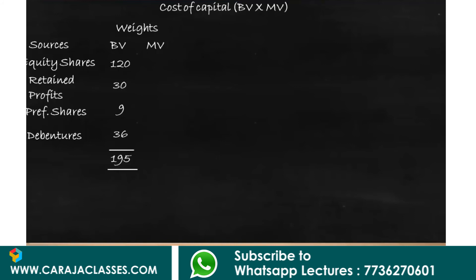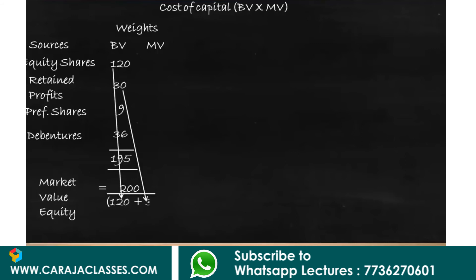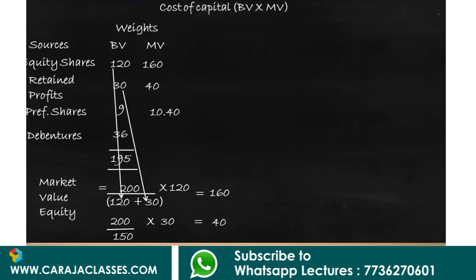For market values, there is no separate bifurcation between equity shares and retained profits; the combined market value is 200 lakh. To split: market value of equity shares is (200/150) × 120 = 160 lakh, and market value of retained profits is (200/150) × 30 = 40 lakh. Market value of preference shares is 10.4 lakh and debentures is 33.75 lakh, giving total market value of 244.15 lakh.